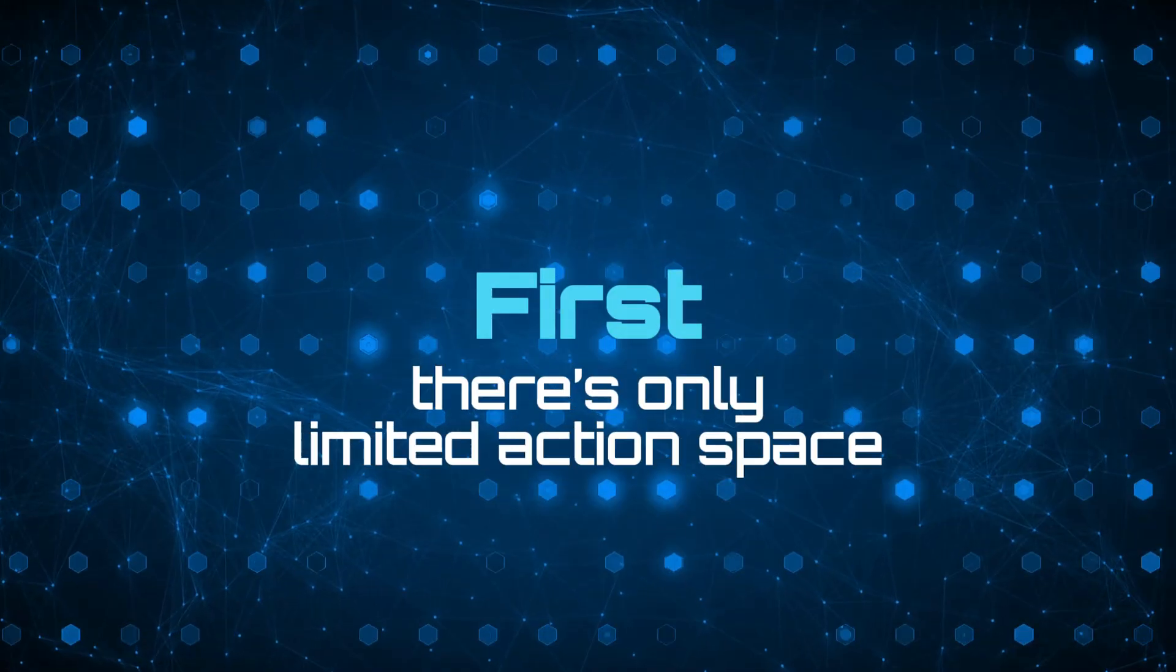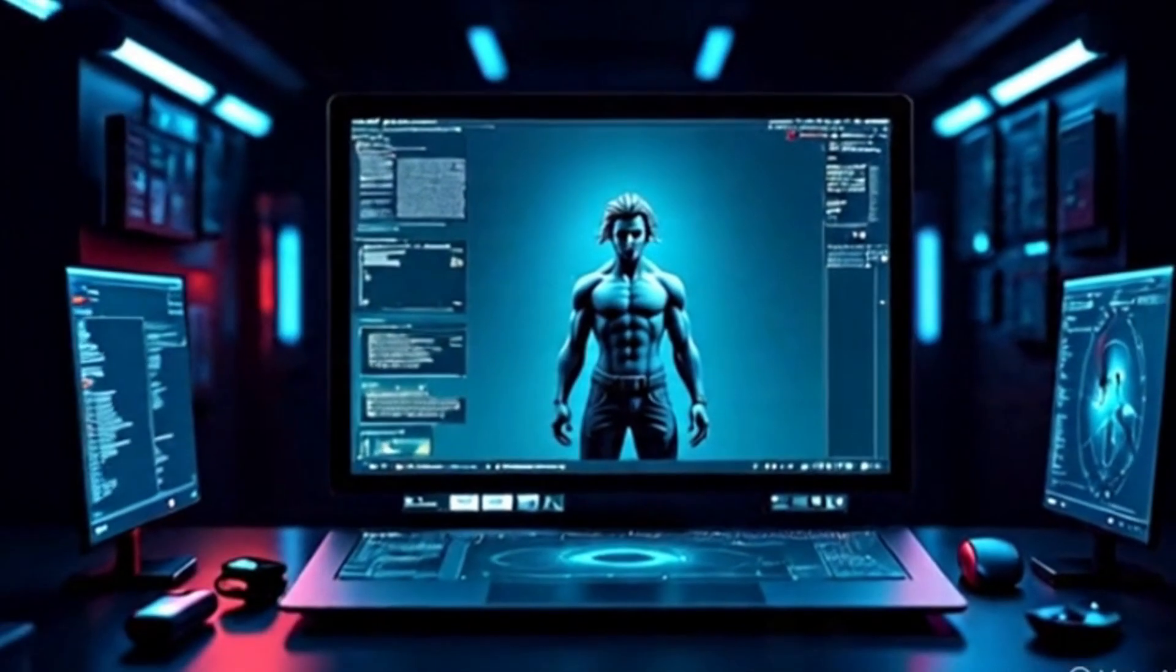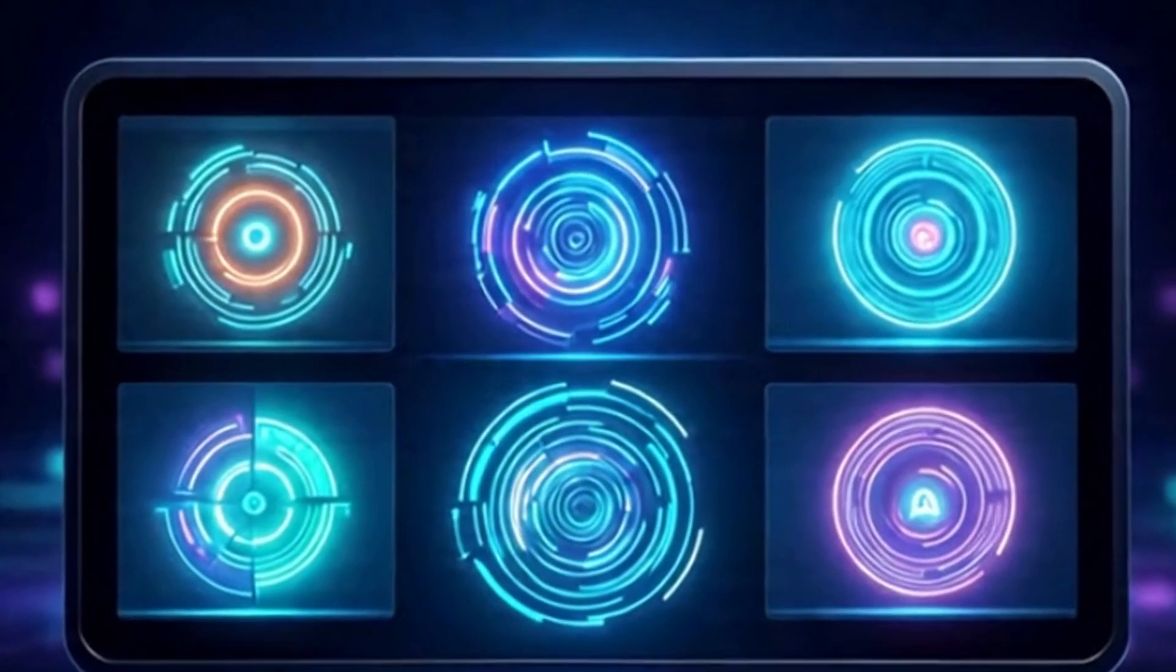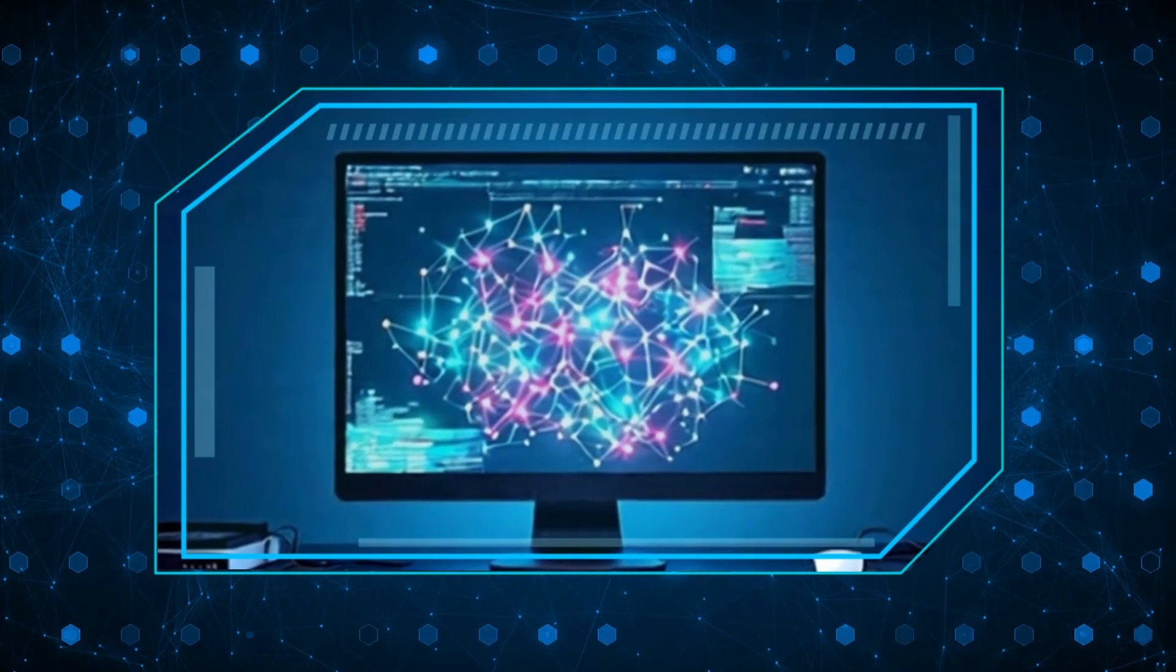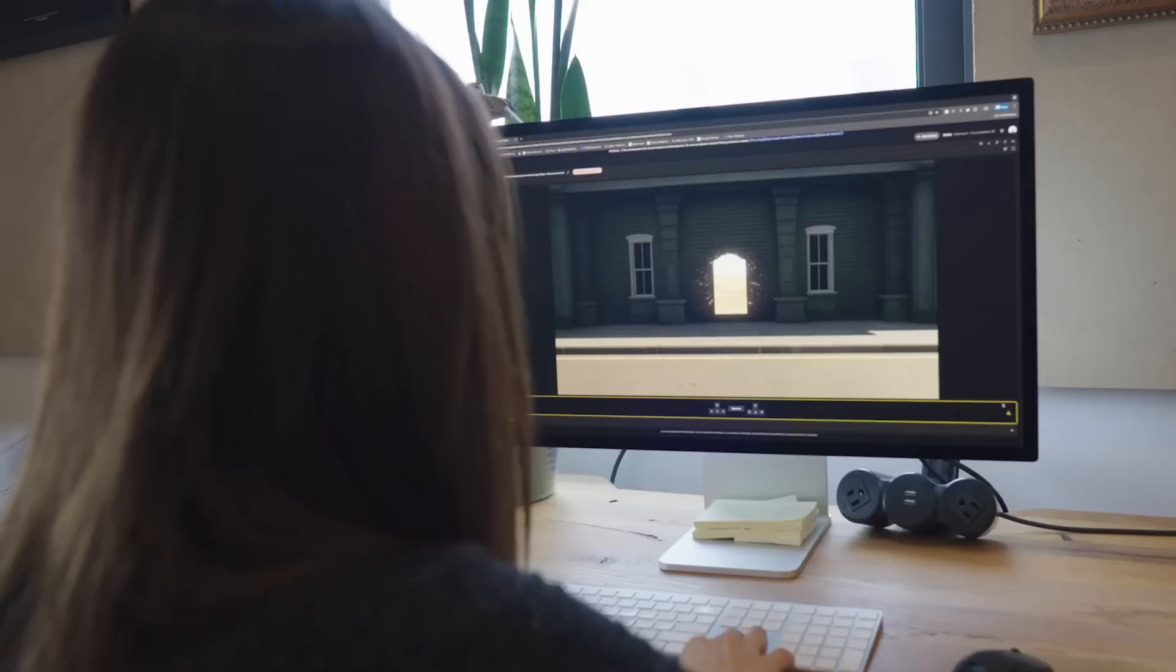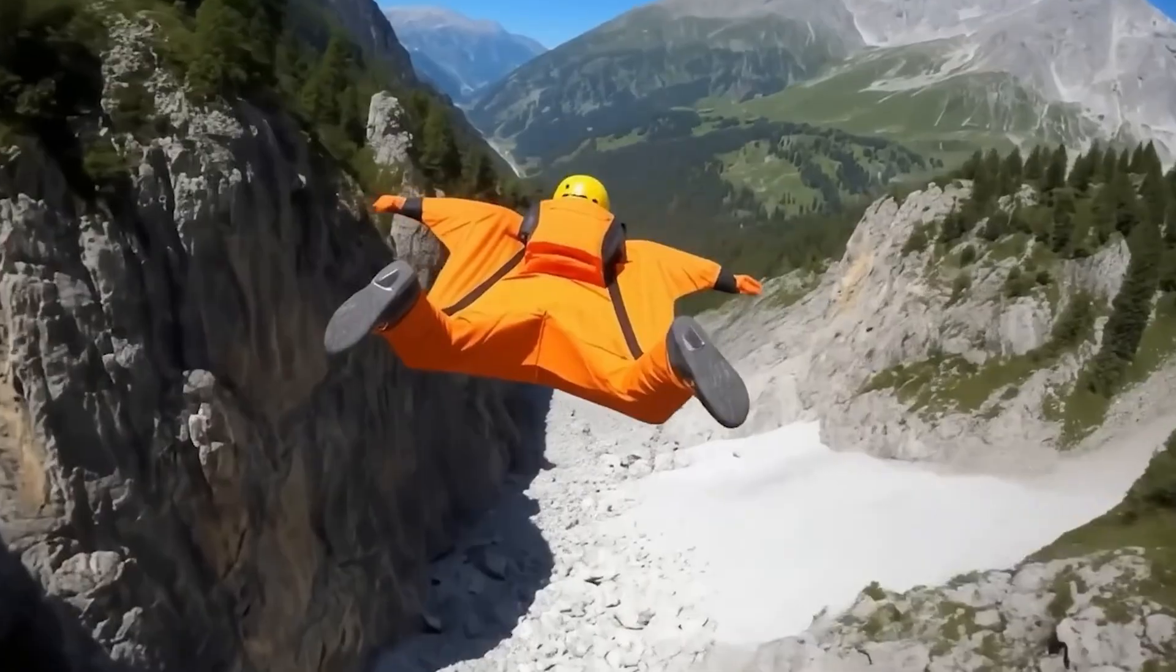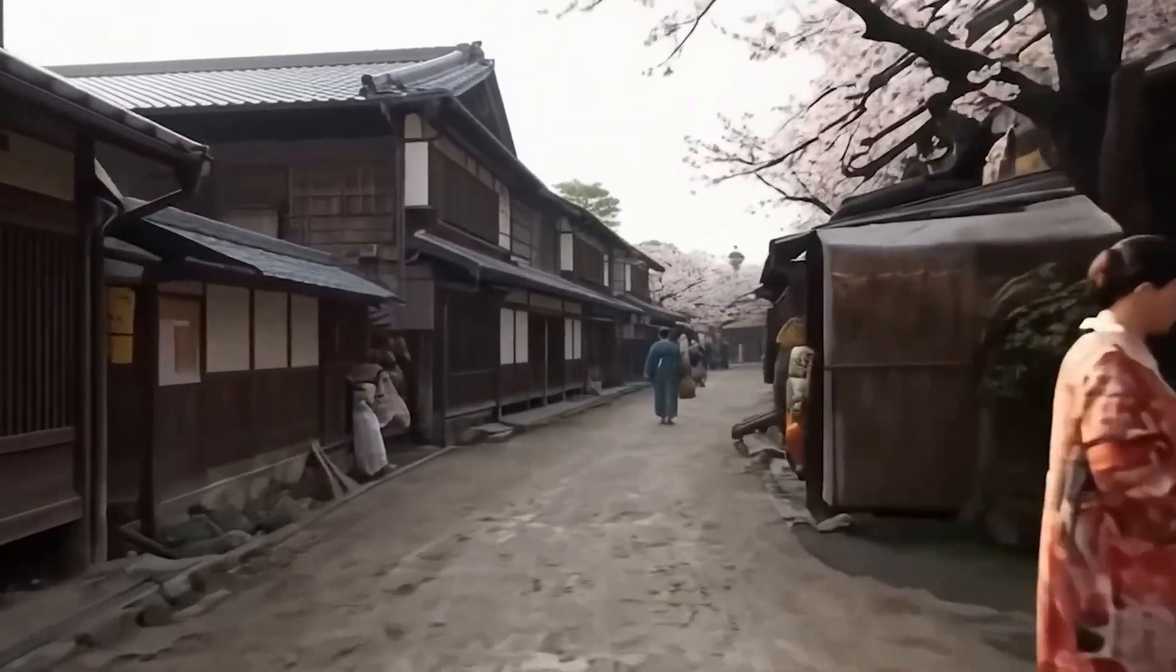However, at the moment, Genie 3 comes with constraints. First, there's only limited action space. Agents can only interact in predefined ways. Full free-form physical manipulation isn't here yet. Second, no native multi-agent modeling. It can't yet simulate multiple independent AIs acting in the same world without hacks. Last but not least, shallow real-world accuracy. The physics engine is visually convincing, but it's not precise enough for engineering-grade simulations. Even with these limitations, Genie 3 marks a significant leap toward persistent, interactive AI environments. It's less video game and more a living lab. And as the action space and multi-agent features expand, it could become the backbone for training the next generation of real-world-capable AI systems.